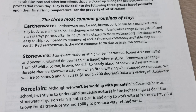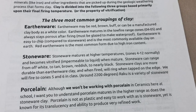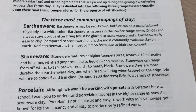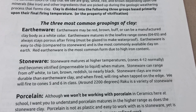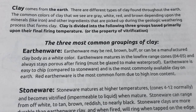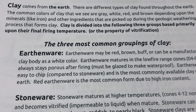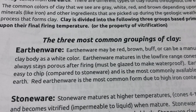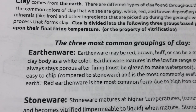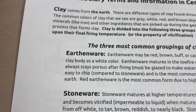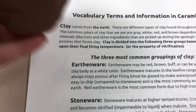Clay comes from the earth. The clay that we're using is dug from the earth and it is natural. It is blended to make very specific clay bodies, and the clay is always divided into groupings — basically three major groupings — based upon their final firing temperature or the property of vitrification.